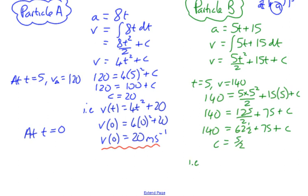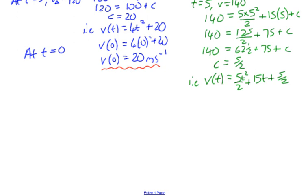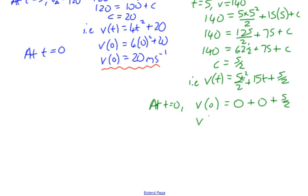Our velocity function for particle B is 5t squared over 2, plus 15t, plus 5 over 2. We want the velocity when t equals zero: substituting zero in, both the 5t squared over 2 and 15t terms vanish, and we end up with the initial velocity being 5 over 2 meters per second for particle B.